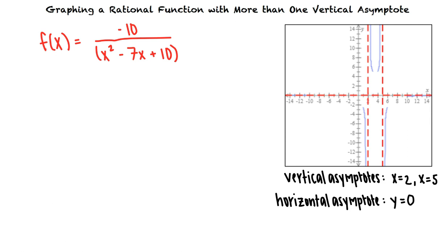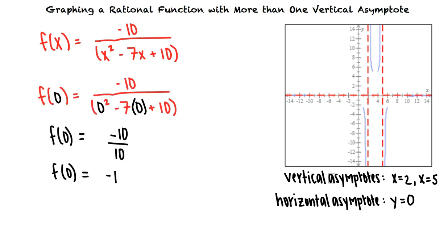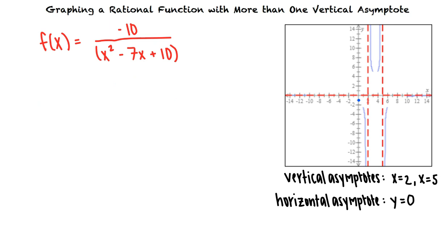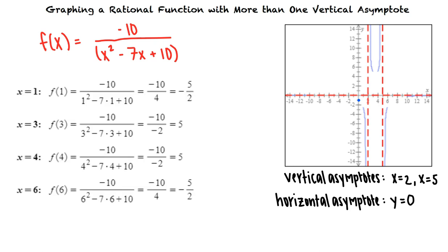We can find the y-intercept by setting x equal to 0 in our function. This tells us the y-intercept is negative 1, and the point (0, -1) lies on the graph of f. Next, we need to find a point on each side of the vertical asymptotes x equals 2 and x equals 5. We can substitute x equals 1, x equals 3, x equals 4, and x equals 6 into our function. This gives us the points (1, -5/2), (3, 5), (4, 5), and (6, -5/2), which also lie on the graph of f.